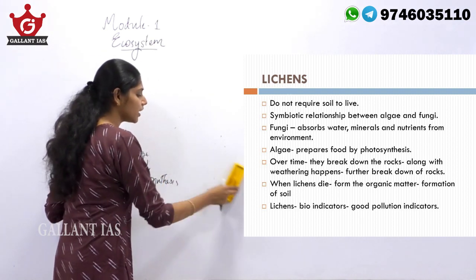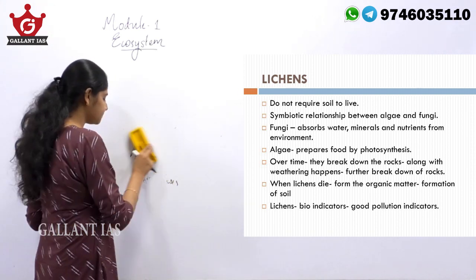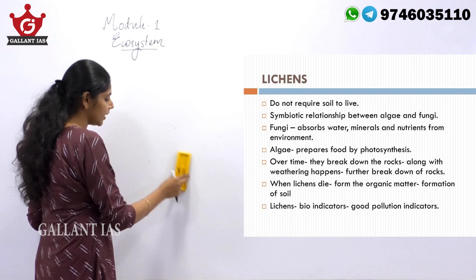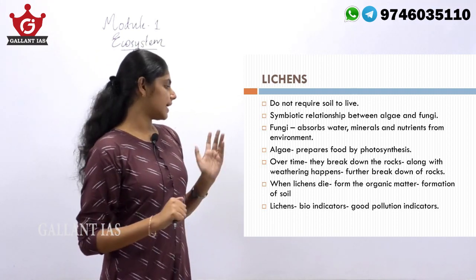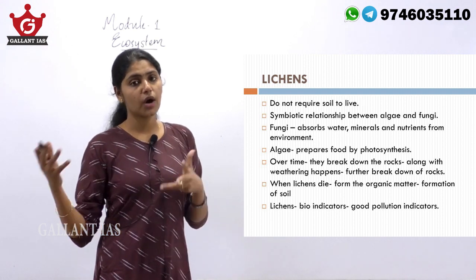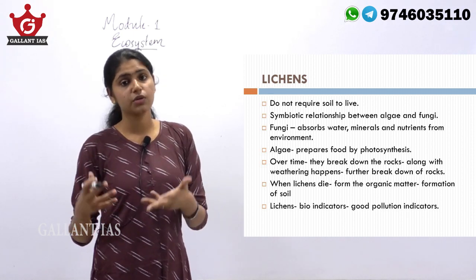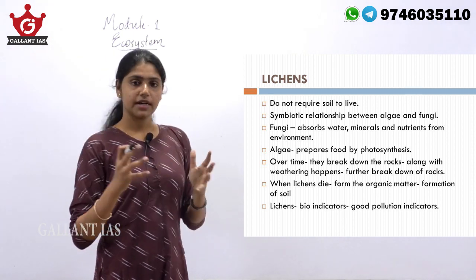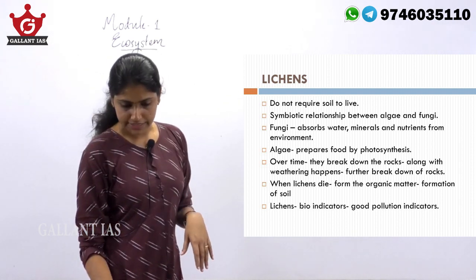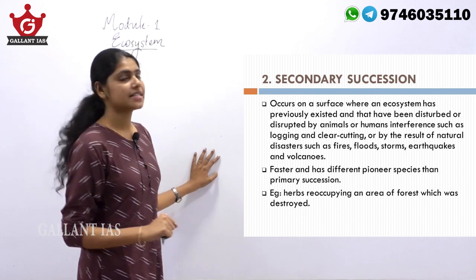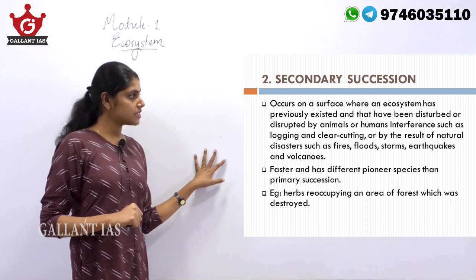Lichens are a very good bio-indicator, meaning they are a pollution indicator. They respond to changes in the environment because lichens do not grow abundantly in areas exposed to high rates of pollution. So they are regarded as a bio-indicator or pollution indicator. Next comes secondary succession.